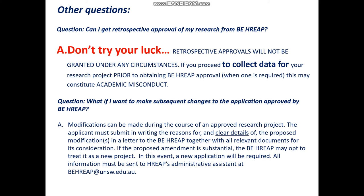What if you want to make subsequent changes to an approved application? You can do that — no problem. But you do have to lodge a modification with clear details of what you need to change before you do it. You can't just go ahead and do something that you haven't had approval for. But you can realize that things need to change, make an application for those changes, get them approved, and then go ahead with them.